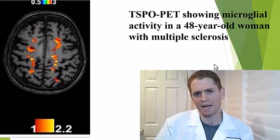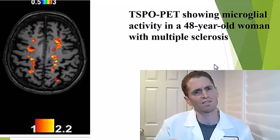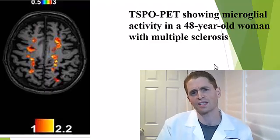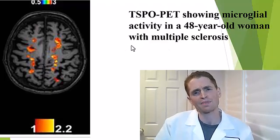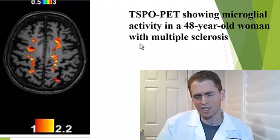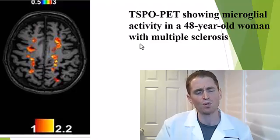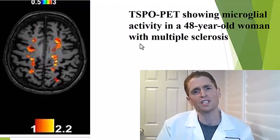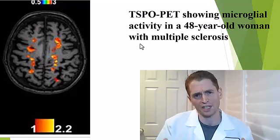Here's a different type of PET scan using a tracer called TSPO, which is a marker of microglia — a type of immune cell within the central nervous system. This is a 48-year-old woman with multiple sclerosis. This type of cell is different from the lymphocytes known to trigger MS, and it's believed that people who have this signal may respond better to a different type of medication than what we're currently giving most MS patients.